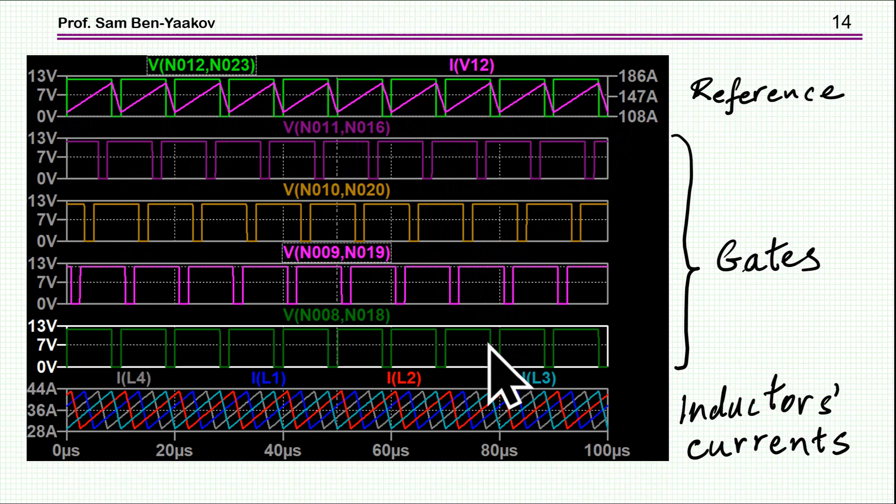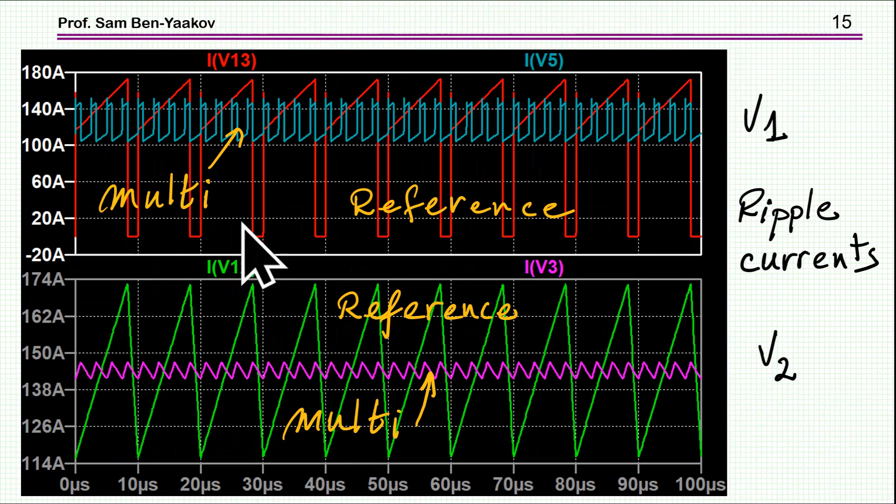And these are the controls for the four phases, the gate control. And here are the current of the four inductors, and you'll see that they are interleaved. And obviously now if you look at the output and input,